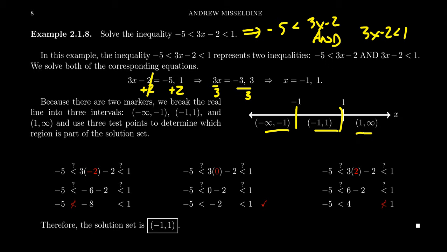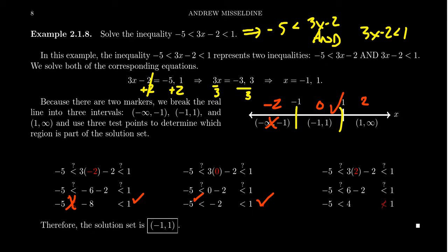Since there are multiple equations in play, I'll use the test point approach. Between negative 1 and 1, I'll use 0; bigger than 1, I'll use 2; less than negative 1, I'll use negative 2. Plugging in negative 2: 3 times negative 2 is negative 6, minus 2 is negative 8. Negative 8 is less than 1, but negative 8 is not bigger than negative 5 — so that interval fails. For x equals 0: 3 times 0 minus 2 is negative 2. Negative 2 is less than 1 and greater than negative 5 — both inequalities are satisfied, so this interval passes.